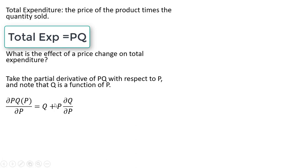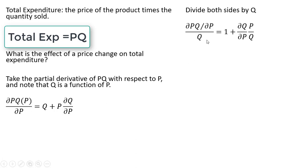Taking the partial derivative of P·Q with respect to P, we get back Q, and then we get P times the partial derivative of Q with respect to price. That is our partial derivative result. The next step is to divide both sides of this equation by Q. The left-hand side divided by Q becomes this expression, and on the right-hand side, Q divided by Q is 1, leaving P divided by Q.